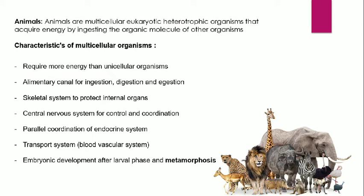They have a well-developed skeletal system whose role is to protect the internal organs — for example, in our body the skeletal system protects internal organs like lungs, liver, and kidneys. They also have a well-developed central nervous system for control and coordination, and a parallel coordination of the endocrine system related to hormones. All hormonal activities are necessary for the growth and development of the body, and hormones are basically chemical messengers.